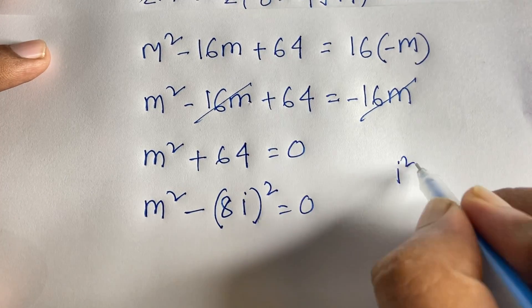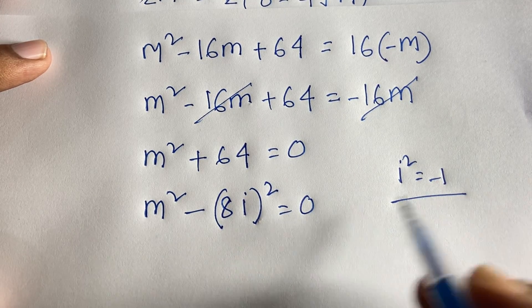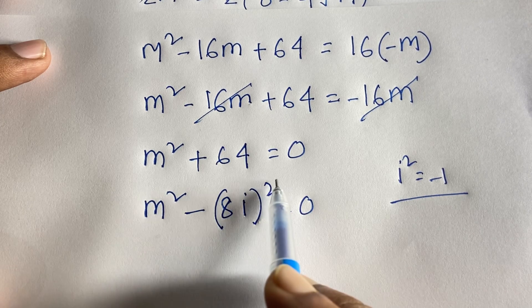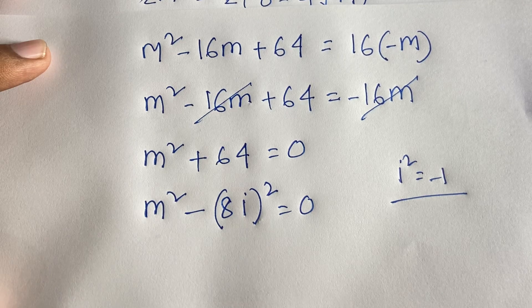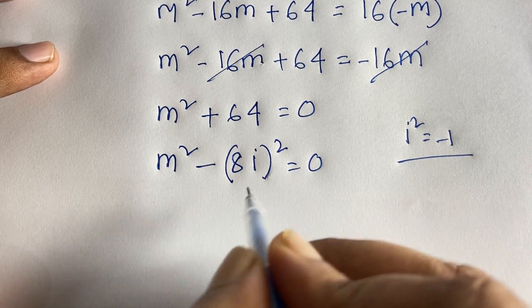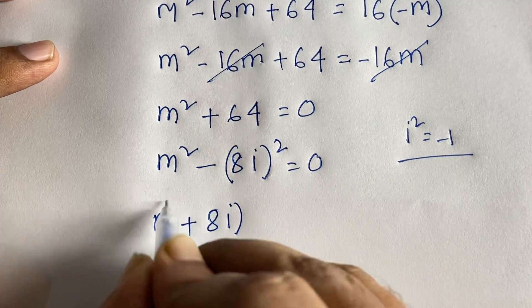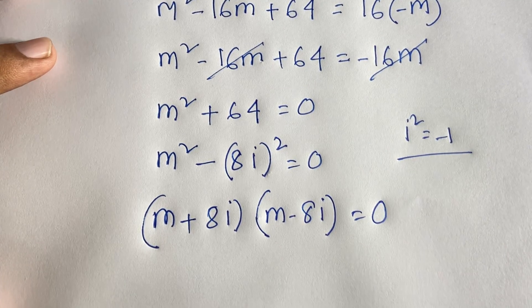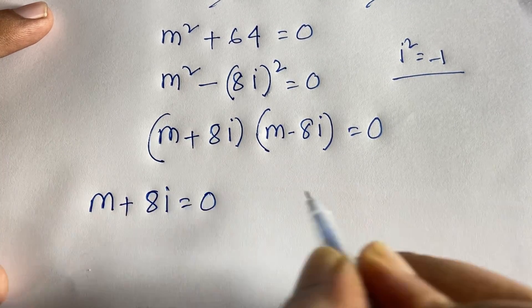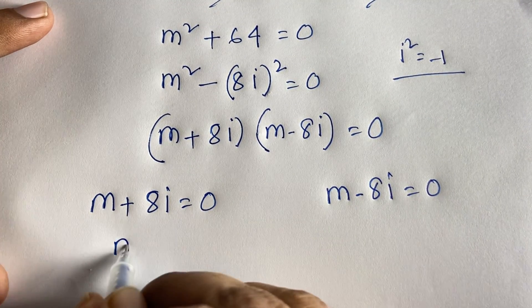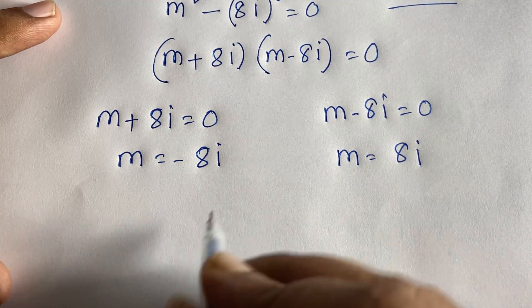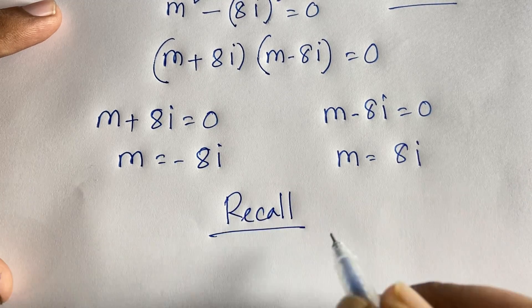Using the difference of squares identity a² minus b² = (a+b)(a-b), we get (m + 8i)(m - 8i) = 0. This gives two cases: m + 8i = 0, so m = -8i; and m - 8i = 0, so m = 8i.